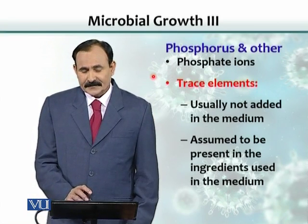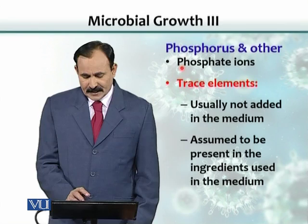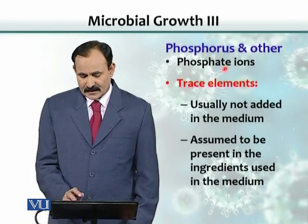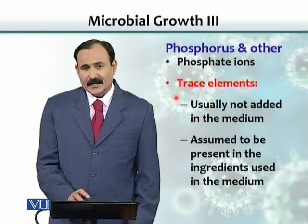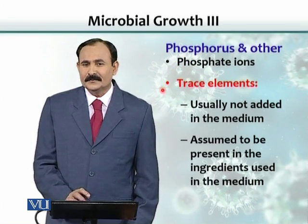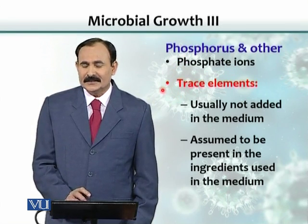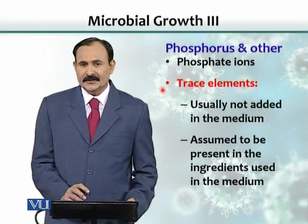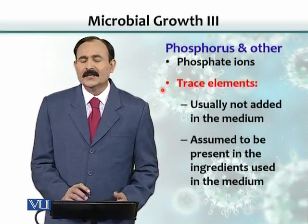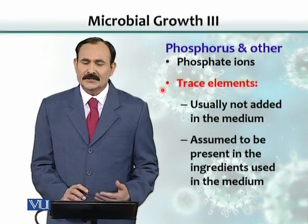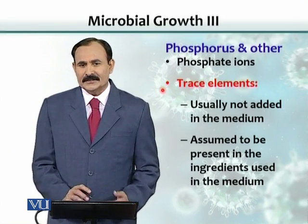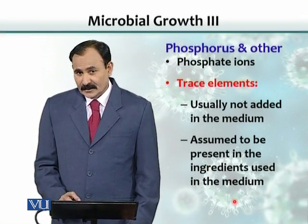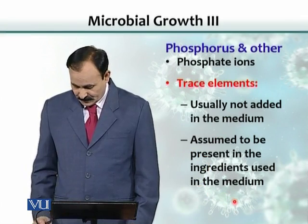Similarly, phosphorus and other elements can be obtained — phosphorus is obtained from phosphate ions. As for trace elements, we don't specifically provide them; they're assumed to be already present in the medium and in whatever substances we use as nutrients.